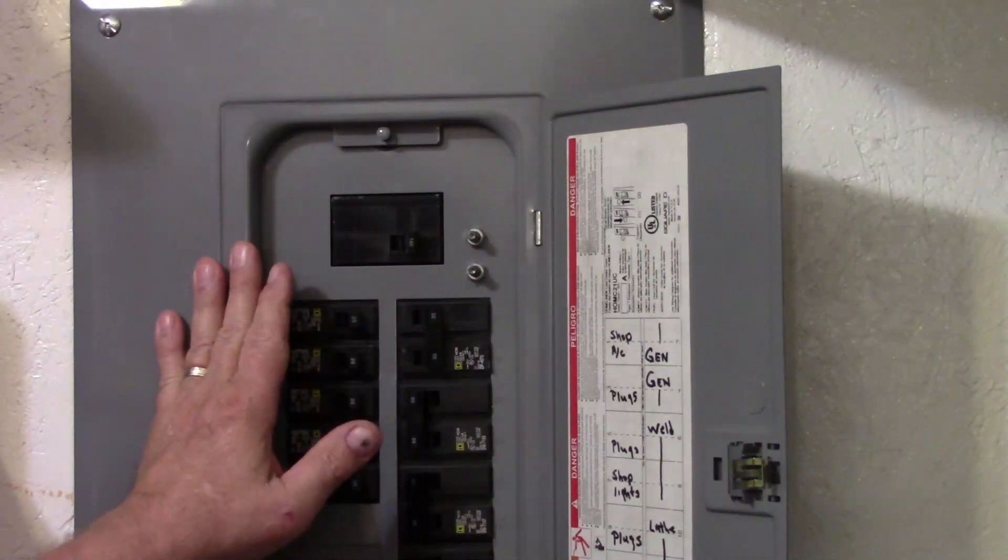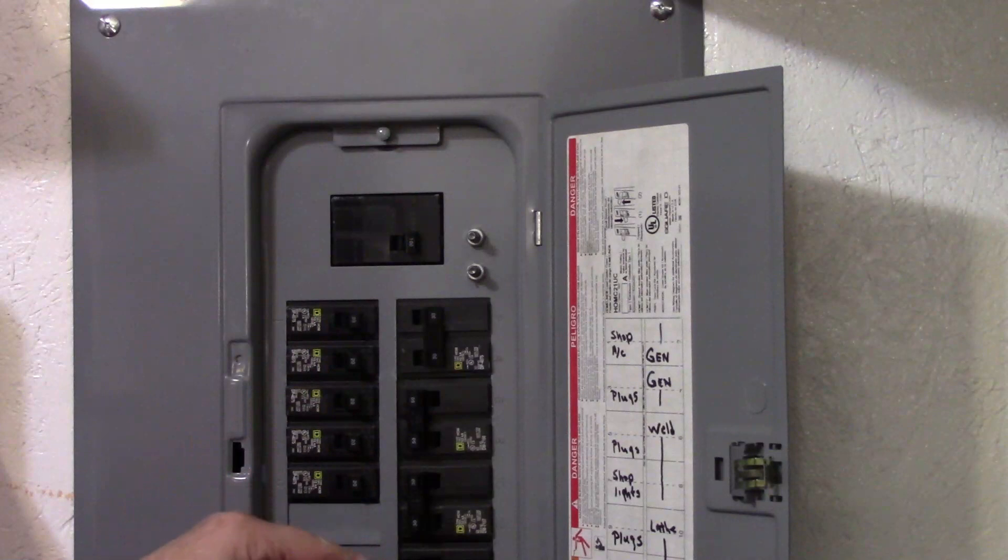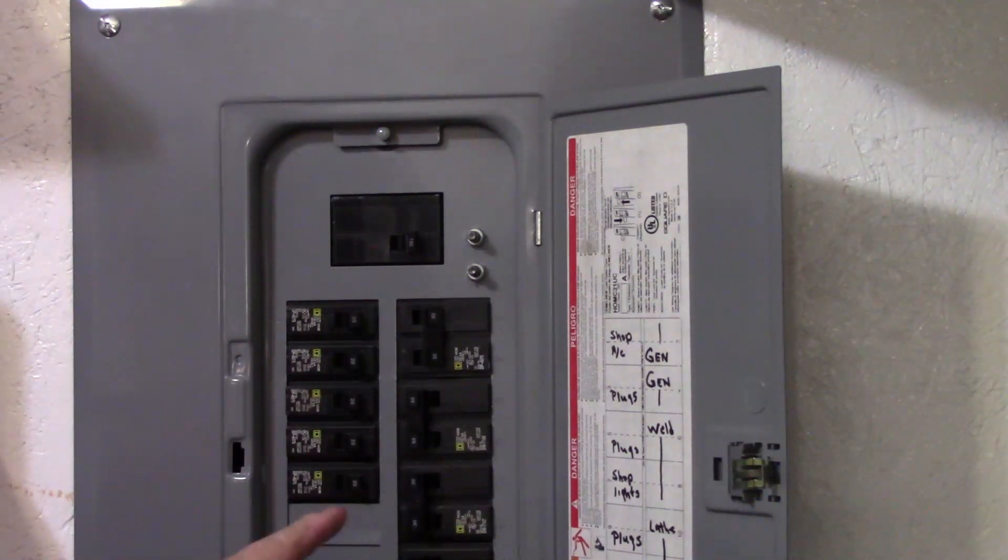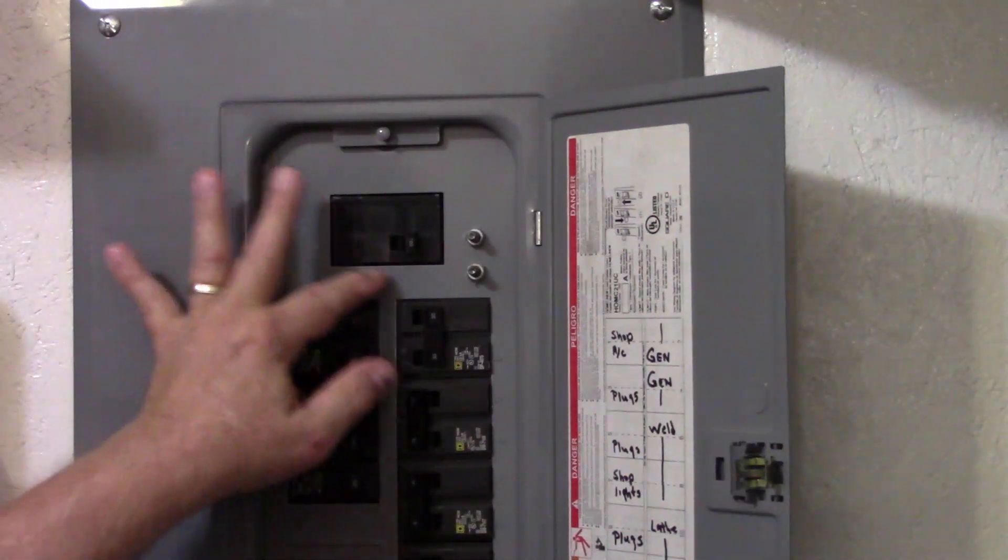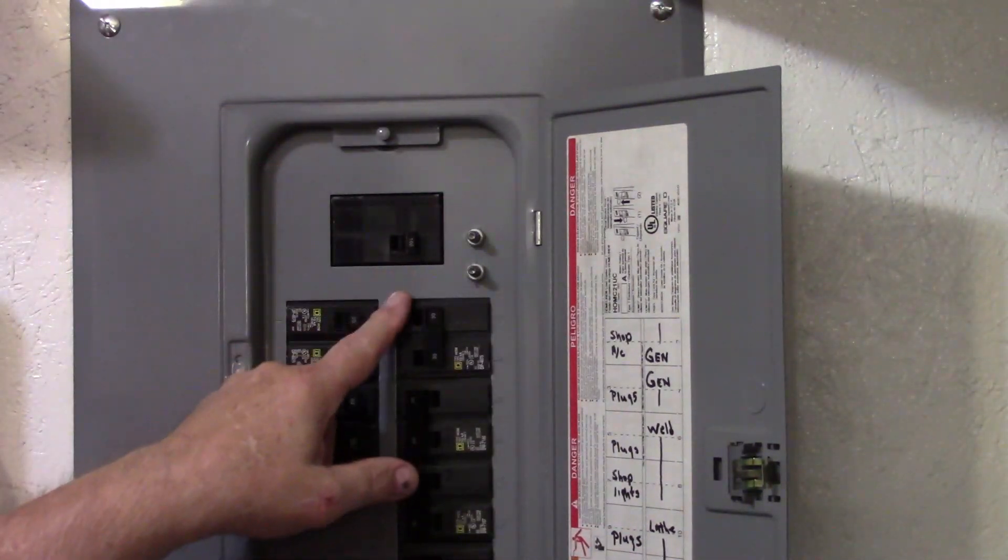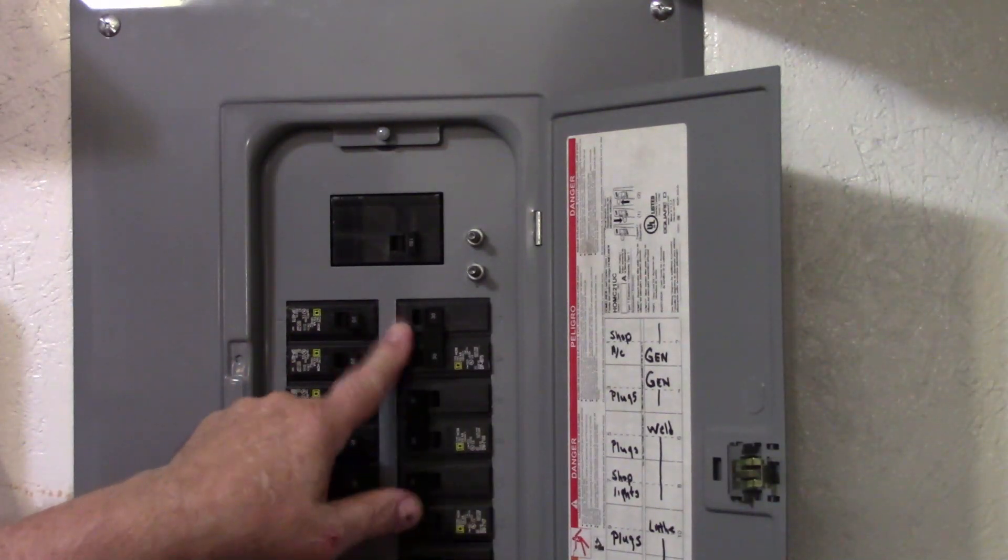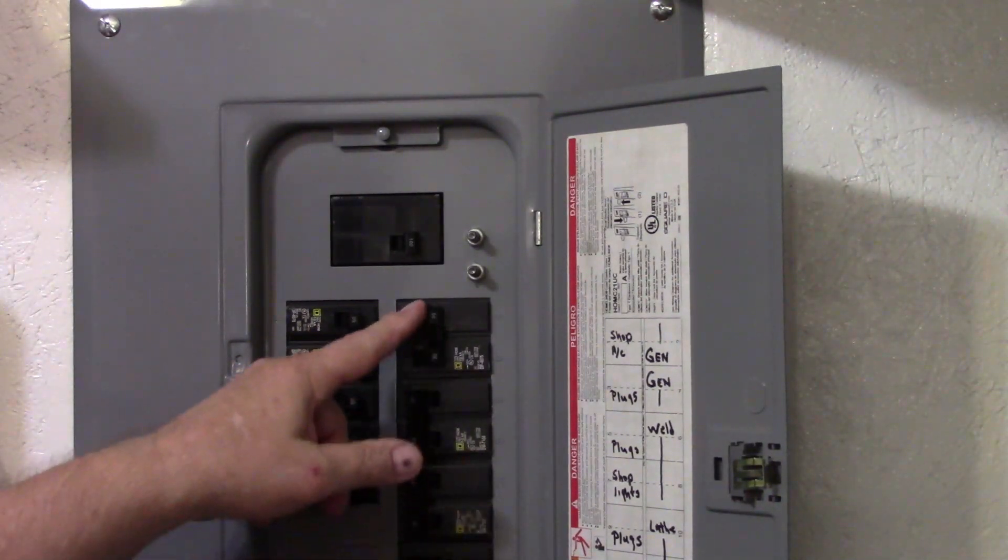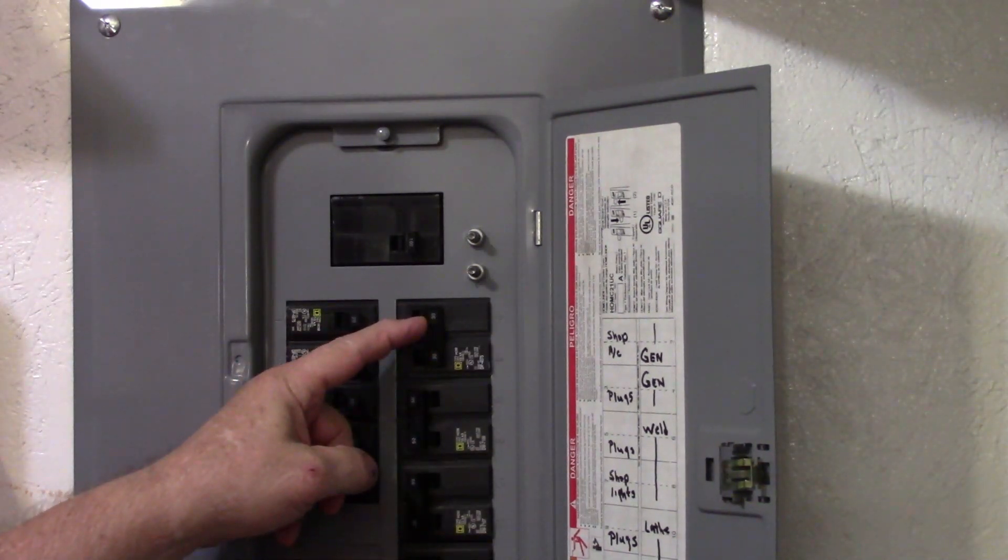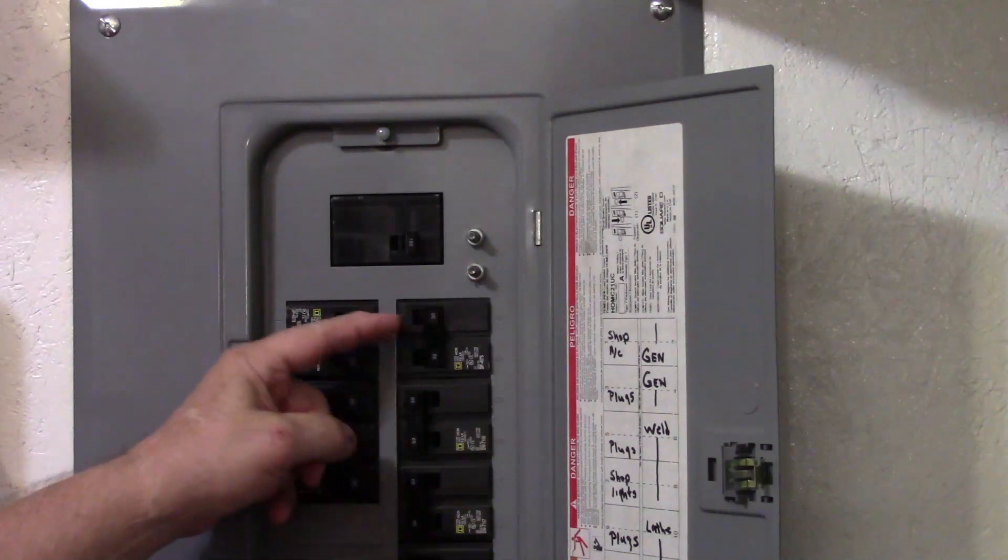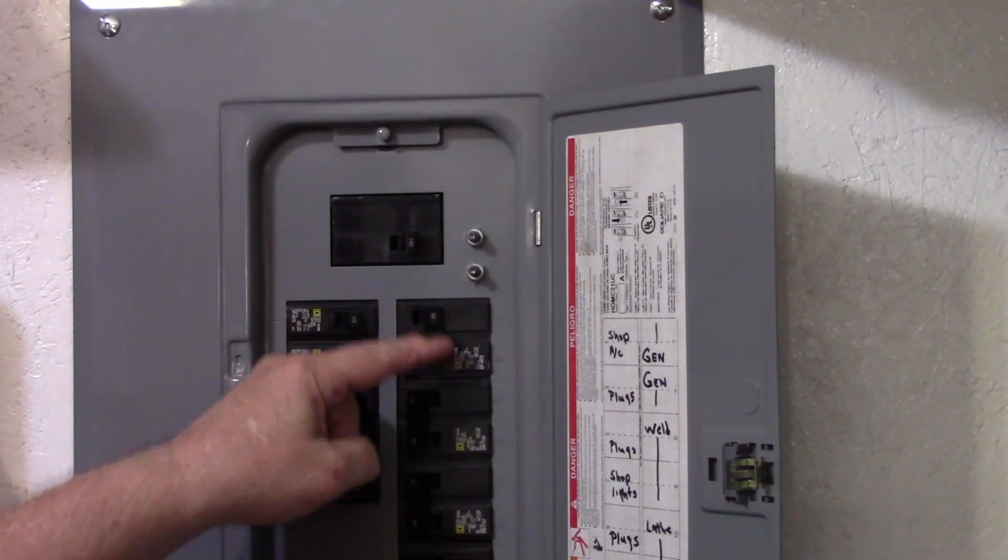This panel that I have right here is a Square D 100 amp service panel that I have in my shop, and I have the 100 amp breaker right here. Your first breaker that's going to be to the right is going to be your generator breaker. My generator will generate a maximum of 30 amps, so I needed a 30 amp breaker right here and that will be the supply for my panel.